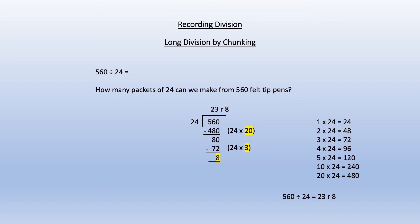Putting the answer back into the original question gives us 560 divided by 24 equals 23 remainder 8 and again children are taught that 8 out of 24 is the fraction 8 24ths which can be simplified to a third so the full answer can also be expressed as 23 and a third.